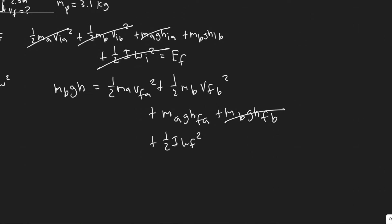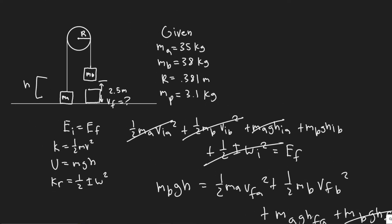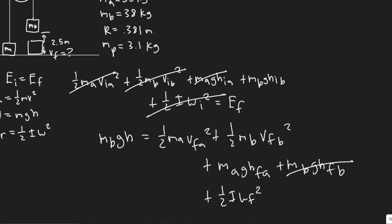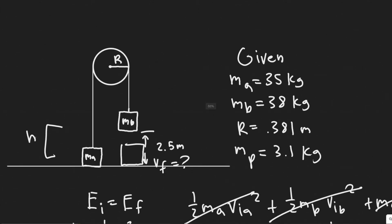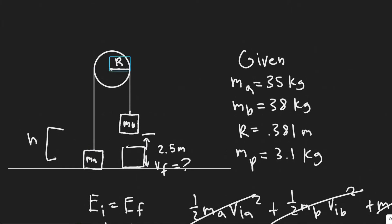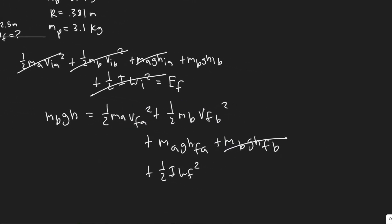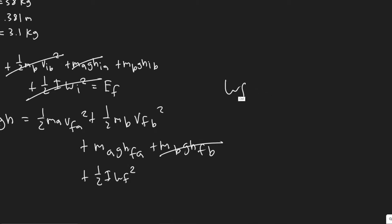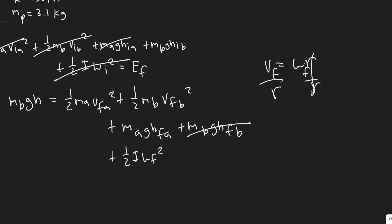Now plugging in all values: 38 × 9.8 × 2.5 = 931 equals one half × (35 + 38) × V_final squared, plus 35 × 9.8 × 2.5 = 857.5, plus one half × 0.225 × V_final squared / 0.381 squared. Simplifying: 35 + 38 divided by 2 = 36.5, and 0.5 × 0.225 / 0.381 squared ≈ 0.775.